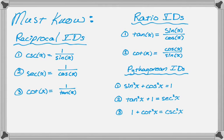There are three reciprocal identities. For example, cosecant equals one over sine. It's also important to realize that sine is equal to one over cosecant, and then you have the other two.